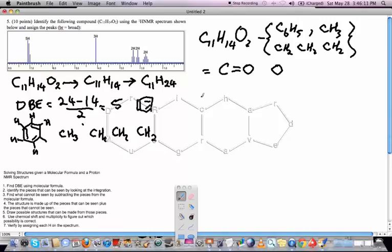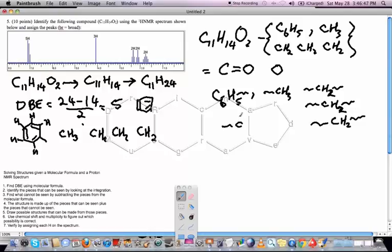Alright, so now we can put together the groups we can see and groups we can't see. I'm going to make this ring a C6H5 ring. I'll just shorten it to that. And then we've got a CH3. And we've got 3 CH2s. In addition to that, we've got a C double bond O with no hydrogens on it and an oxygen with no hydrogens. So these are all the pieces that we need to include.